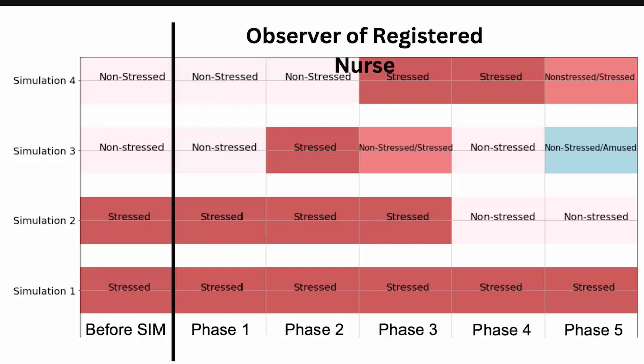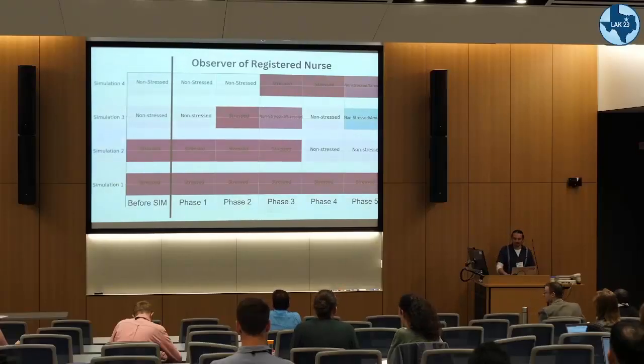Some of the prototype visualizations we used to address our research questions: in each row we have one simulation, and we can see for the main nurse receiving the aggression what the stress levels were in each of the simulations and each of the teams. You can see students reacted differently to this stress-provoking actor — most of them were stressed during the situation. The labels used were stress, non-stress, and amused, which were the labels from the dataset we used for training the model.